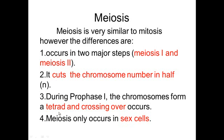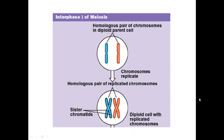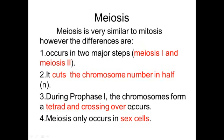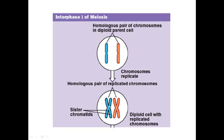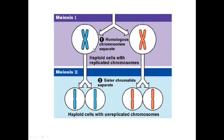During prophase one, a tetrad forms and crossing over occurs, providing the genetic variation discussed in the video. Meiosis only occurs in sex cells like sperm or eggs. You start with two chromosomes — one from mom, one from dad. During S phase, chromosomes are replicated, giving you two from dad and two from mom. In meiosis one, you split so you have two from either dad or mom. Then in meiosis two, those two separate so each gamete has one chromosome.